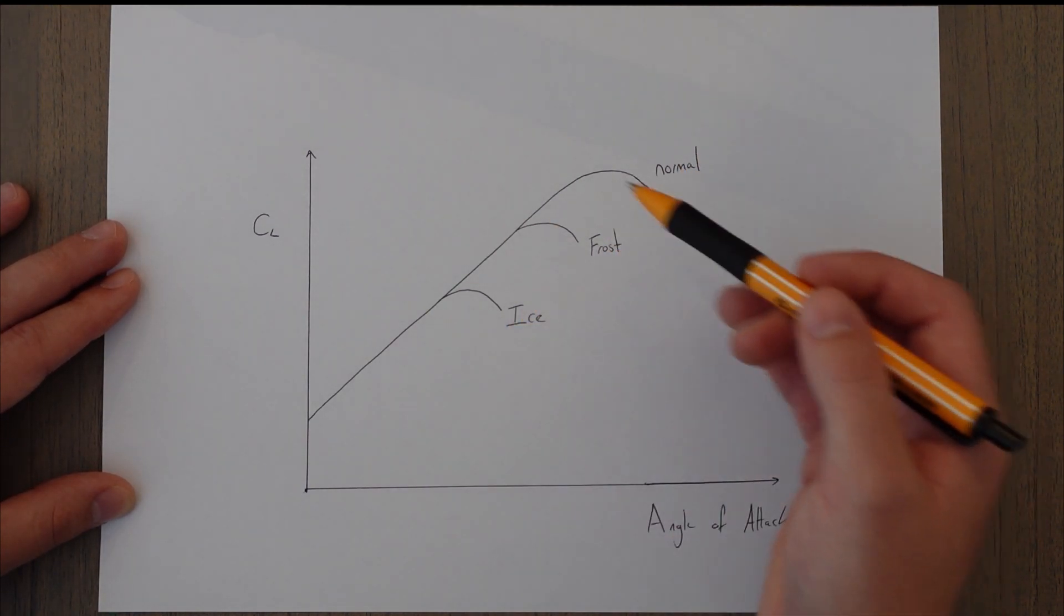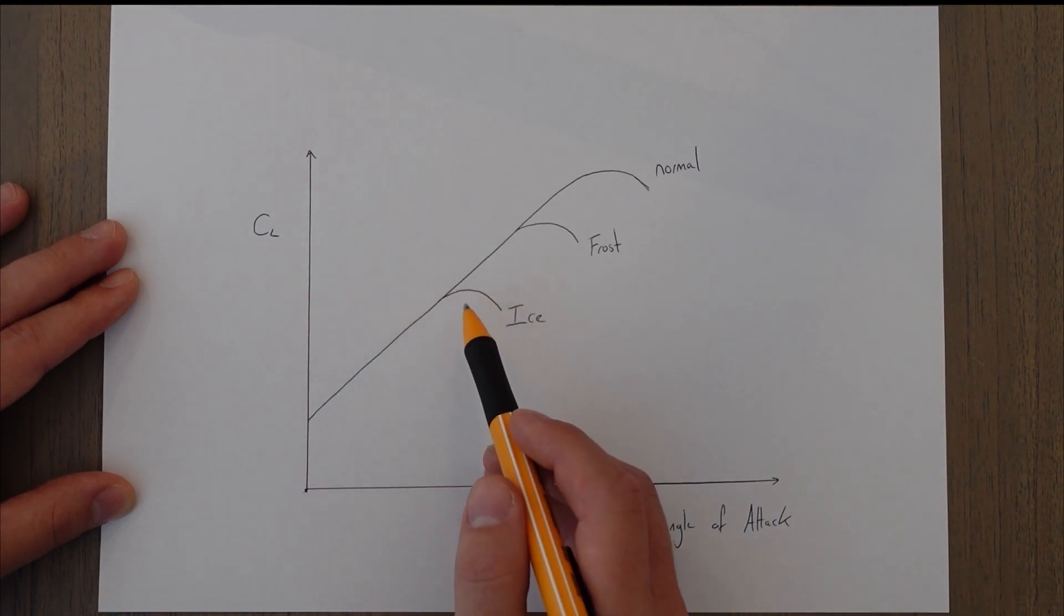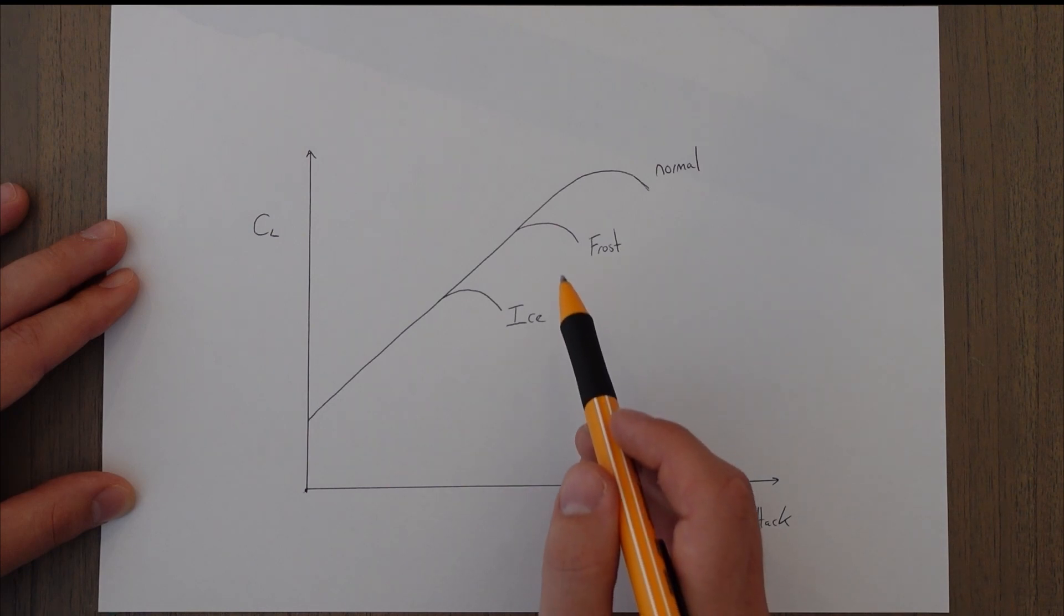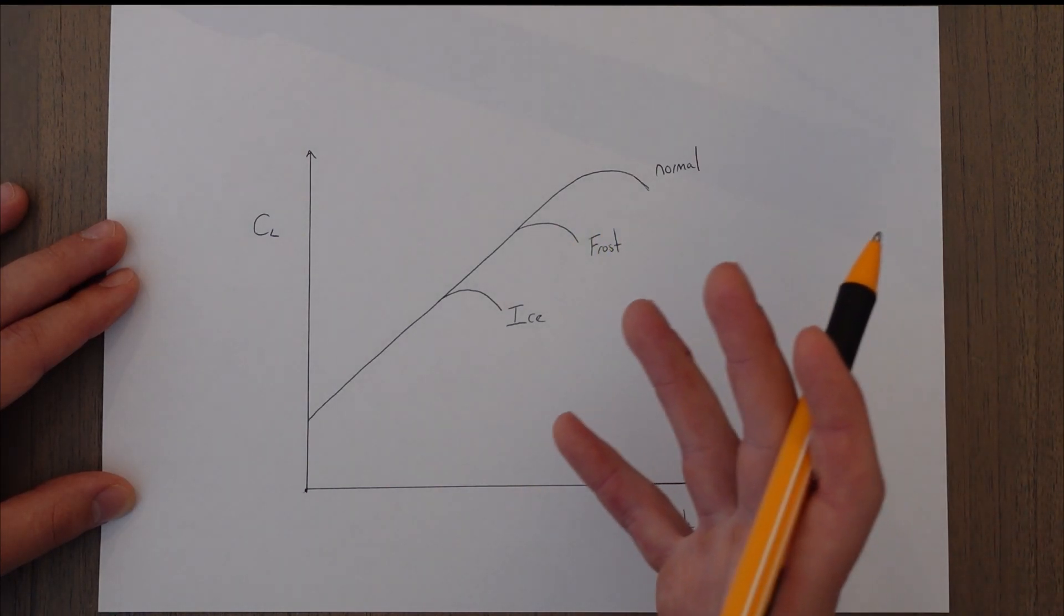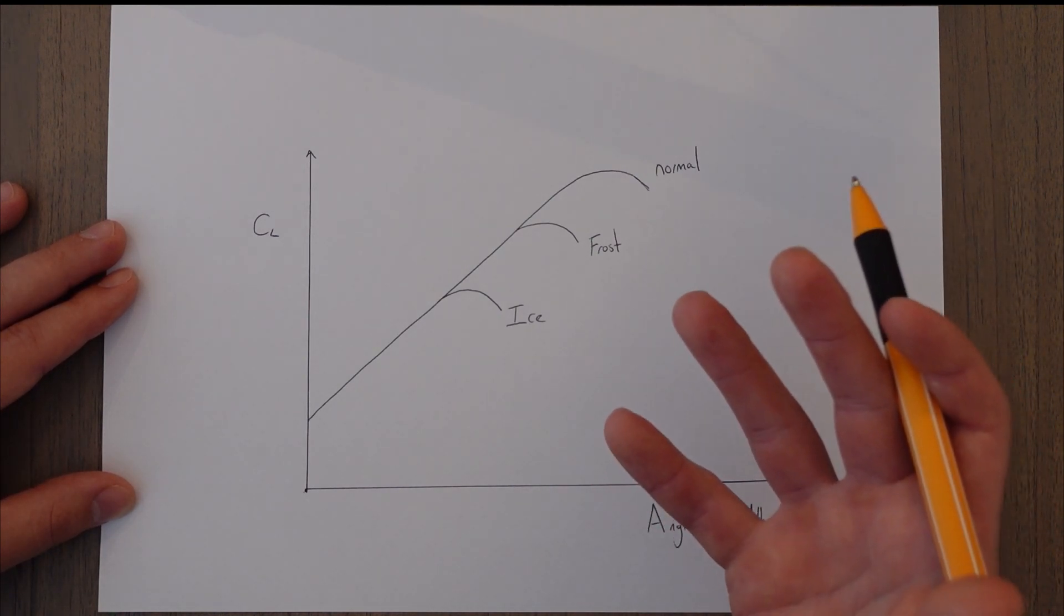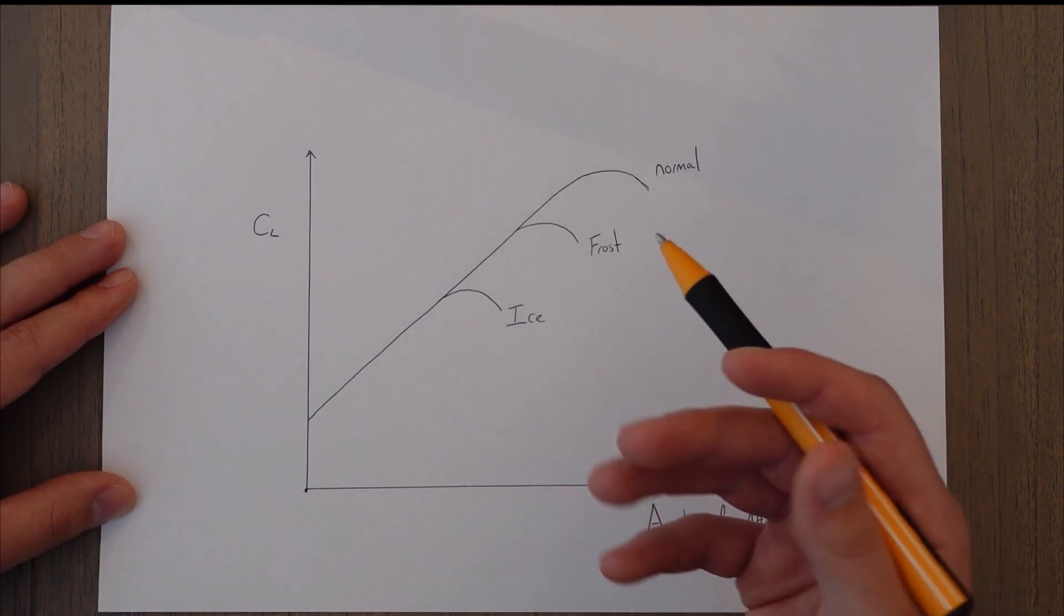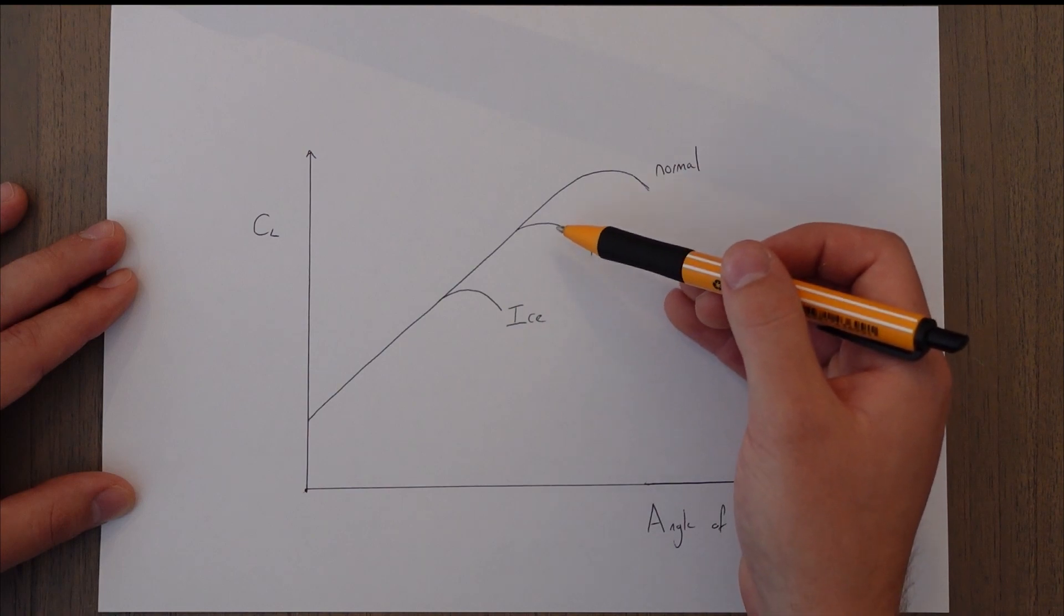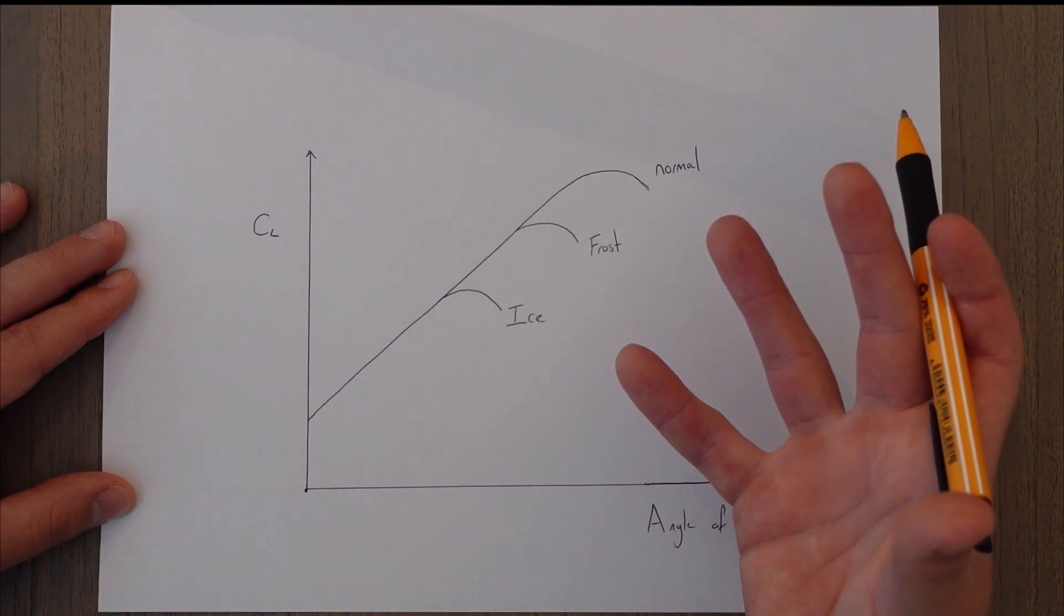The obvious problems can be seen right here. We have a lower value for our CL max and we have an earlier, lower stalling angle of attack. The weight of the ice as well must be taken into account and it means we're heavier and therefore need more lift, so we must travel faster to achieve the same amount of lift with this reduced value for CL max which means our stall speed increases.